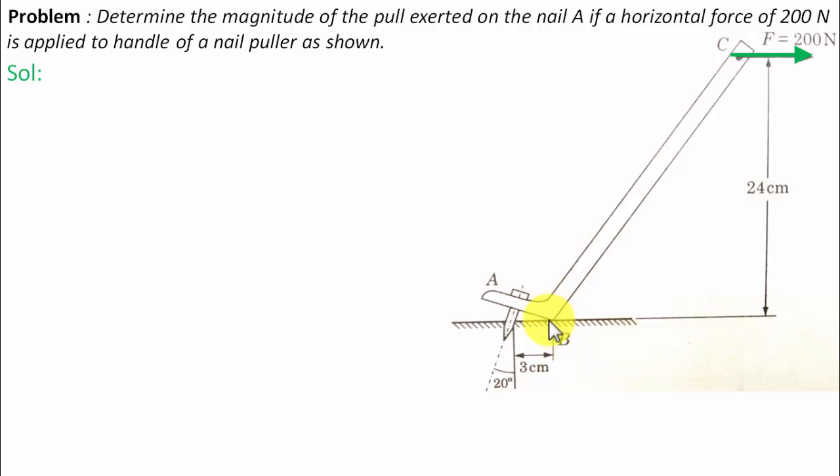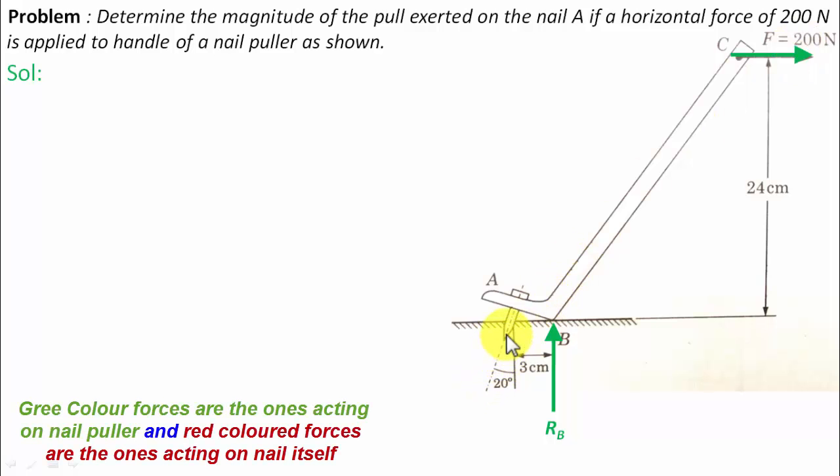Now, this nail puller is in contact with the surface at point B, and hence this surface is going to offer a reaction in the form of rb. You can clearly see that there is an axis of this nail, and when this force of 200 Newton is applied, the nail is definitely going to experience a force somewhere along this direction.